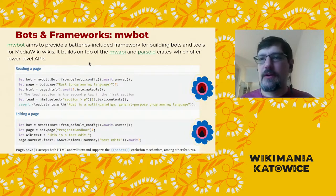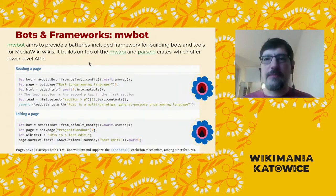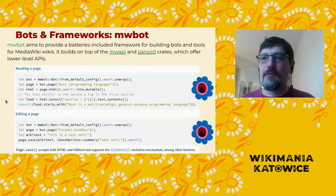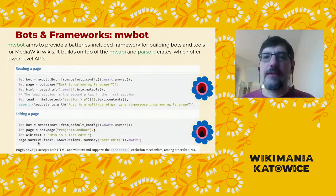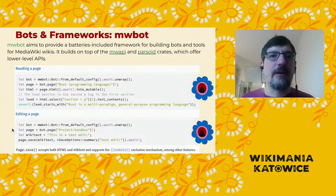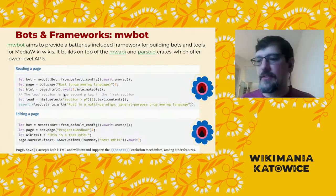MWBot is a newer framework. One of its distinguishing features is that it uses the Parsoid parser to allow you to do syntax-directed transformations on Wikitext in a more structured way. This is what the Rust code for reading a page looks like, and if you want to save the page, you call page.save. There are also methods to convert Wikitext to HTML and back, powered by Parsoid. And because it uses a real parser, it is much less likely to run into the wizard problem.